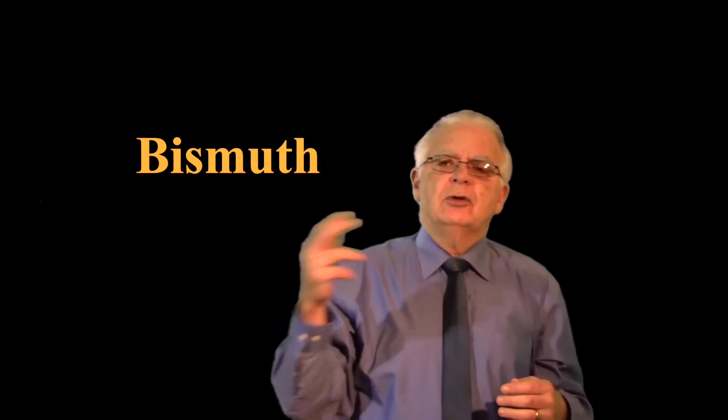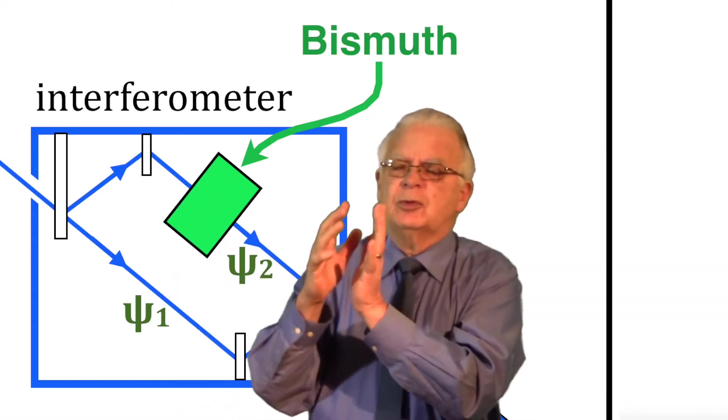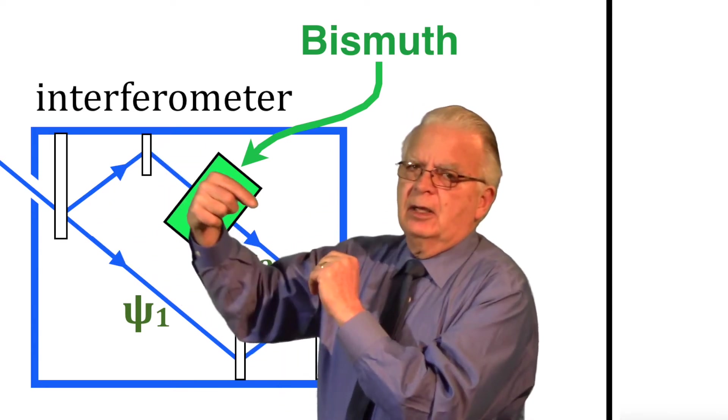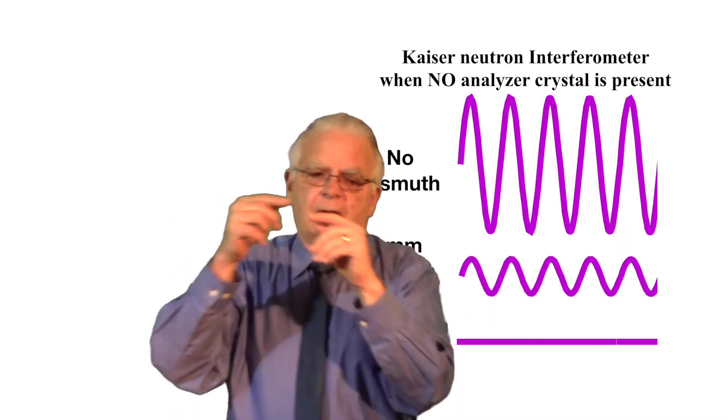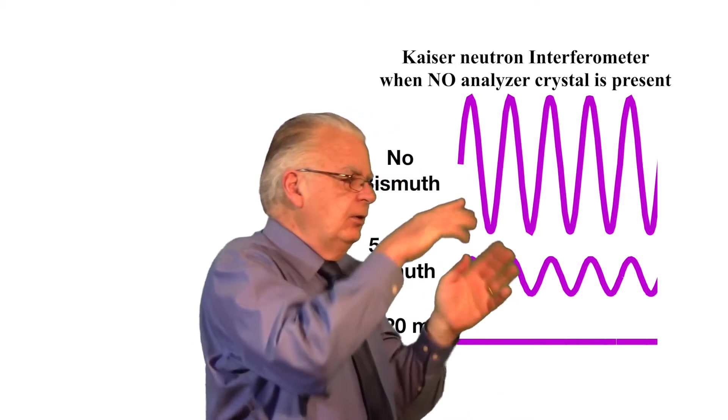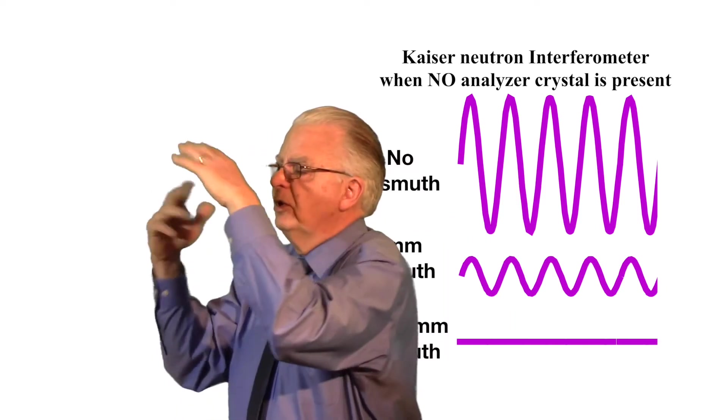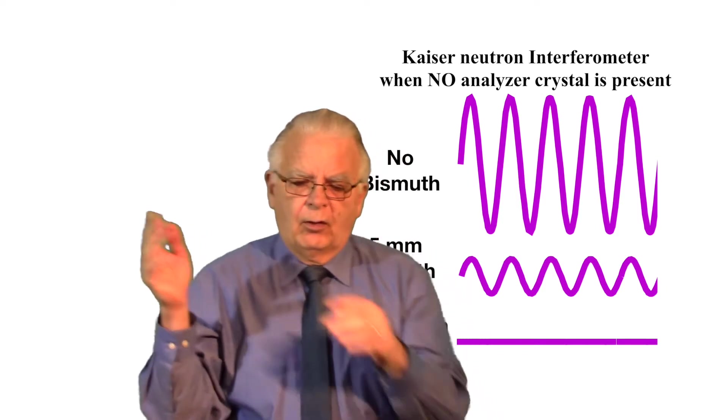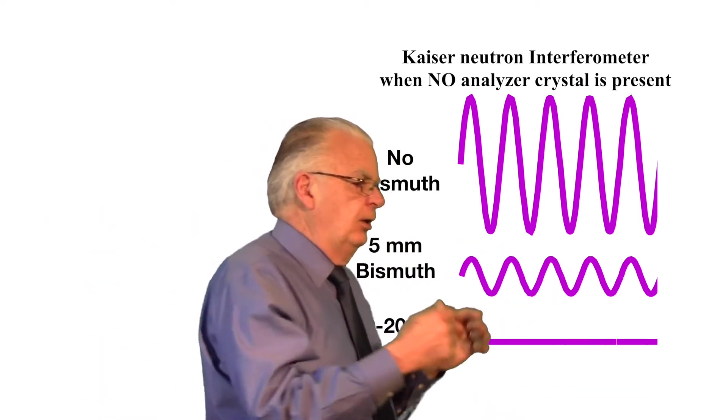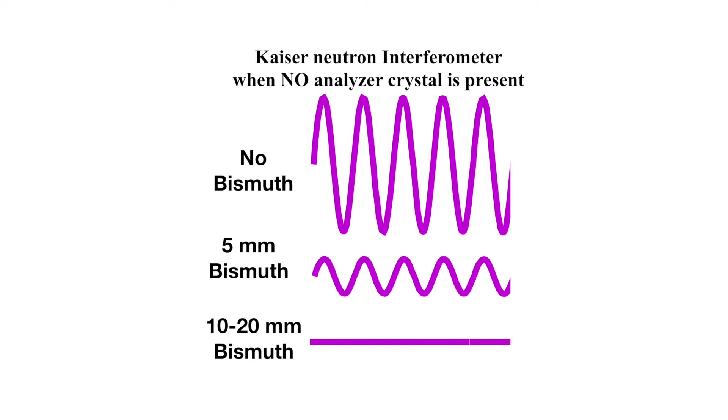Bismuth is a metal that slows down neutrons and neutron waves, so they put a sample of bismuth into the upper pathway so that the upper wave packet is slowed down relative to the lower wave packet. If they put in no bismuth you get a lot of oscillation in the final signal. If they put in five millimeters of bismuth, the upper wave packet and lower wave packet don't quite overlap and therefore there is a muted amount of interference. If they put in ten to twenty millimeters of bismuth in the upper pathway, all interference is destroyed and you just get a flat line.